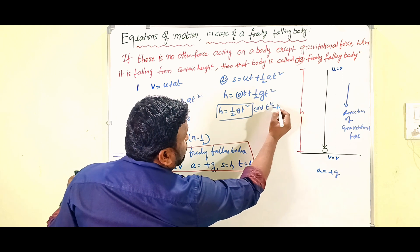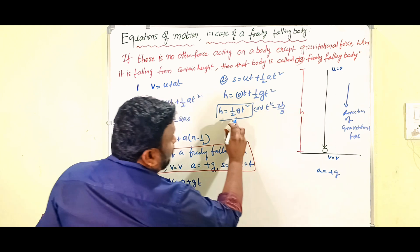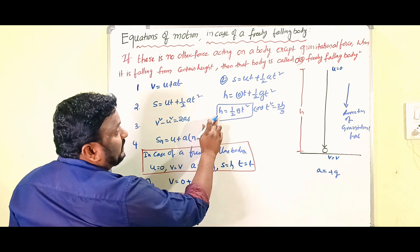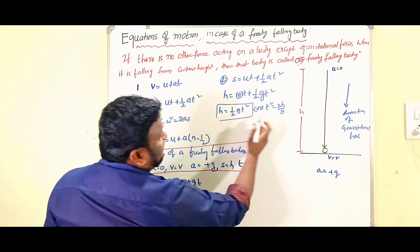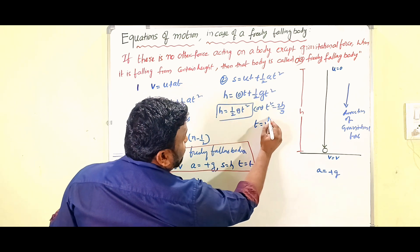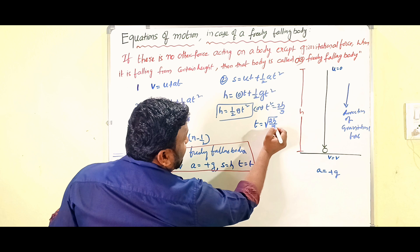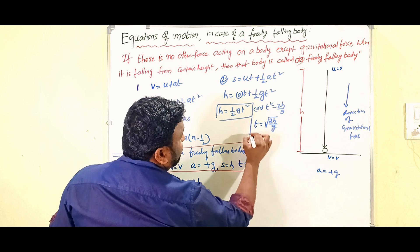From that we can write: t squared equals 2h divided by g. Therefore, t equals the square root of 2h by g.